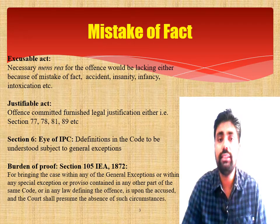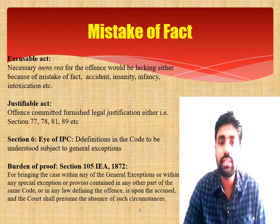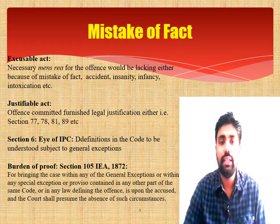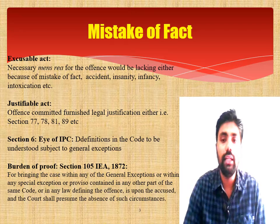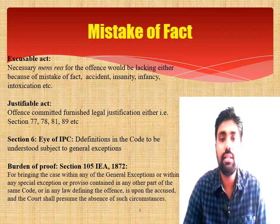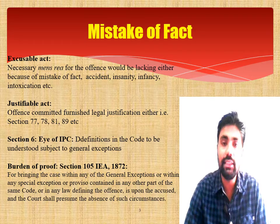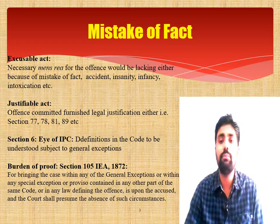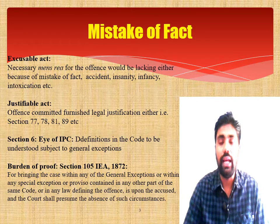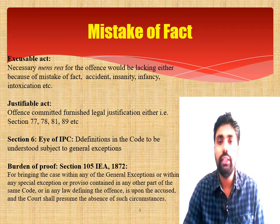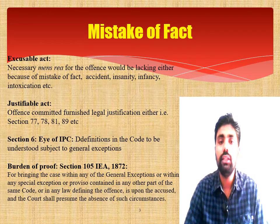Now, a very important distinction: the terms 'justiciable' and 'justifiable.' In case of a Justifiable Act, the offense committed furnishes a legal justification. For example, under Section 77, if a judge commits an act by virtue of a law that gives him power to do so, and in that course he does something wrong, it furnishes a legal justification. Similarly, a person acting under the direction of the court has a legal justification.